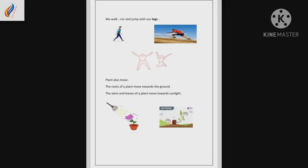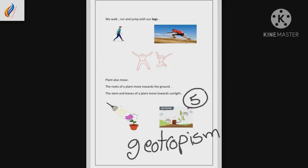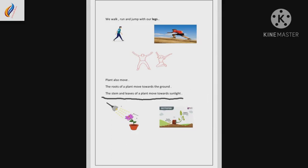But what do we call this process? We call it as a geotropism. Geotropism, which is the way plants or plant parts react to gravity.